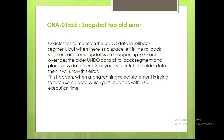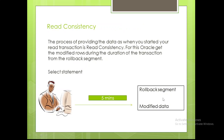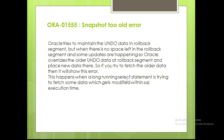There are users updating data all the time. When the rollback segment is full, Oracle overrides the older undo data and places new data there. The rollback segment already has data like inserted rows and deleted rows. To accommodate new transactions, Oracle removes older data and puts new data in its place.